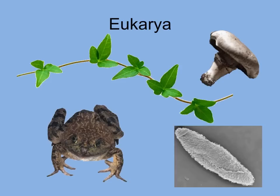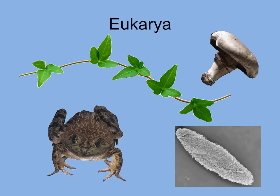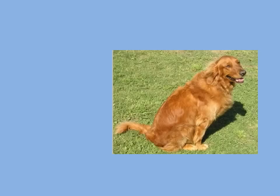So all plants, like this ivy; fungi, like this mushroom; animals, like this frog; and protists, like this paramecium, are in the domain eukarya. Organisms in each of the domains are grouped into various taxa based on their similarities.